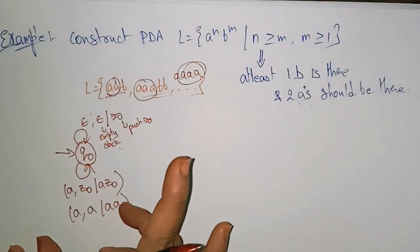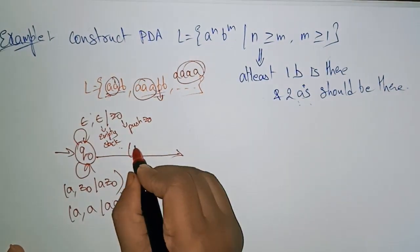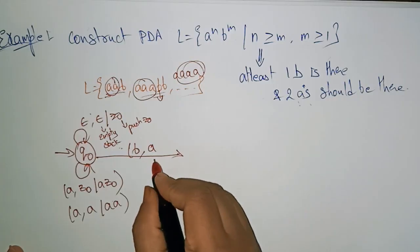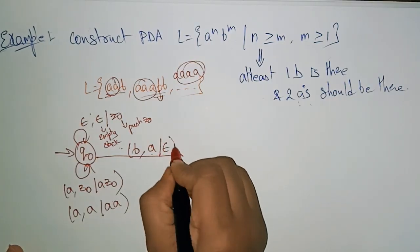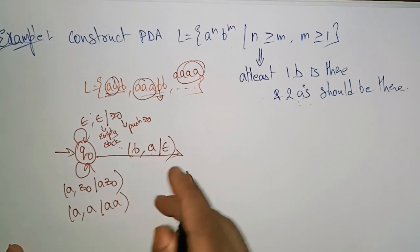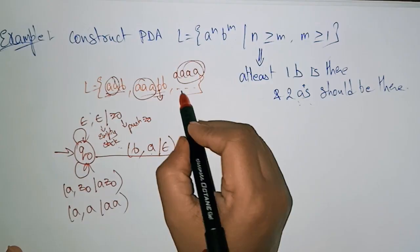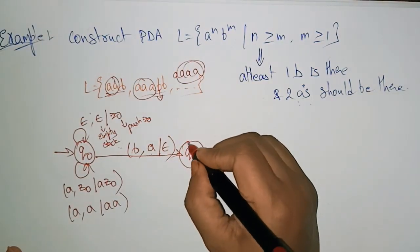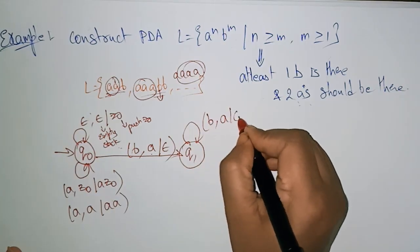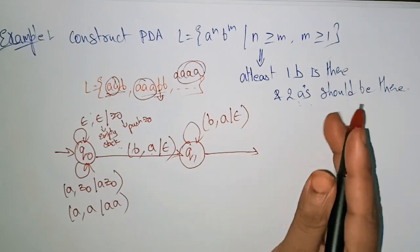Now coming to the next input: when I read input 'b', the 'a' which is present on the top of the stack has to be popped. Whenever I read another new input 'b', it changes the state. So one 'b' is done. If there are multiple b's, we keep reading 'b' and popping 'a' from the top of the stack.